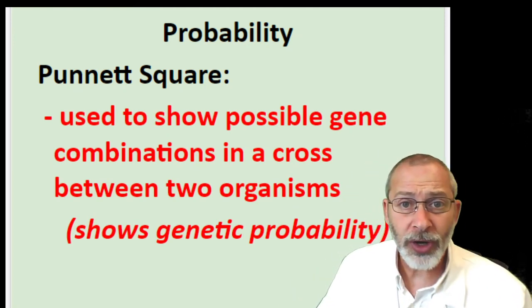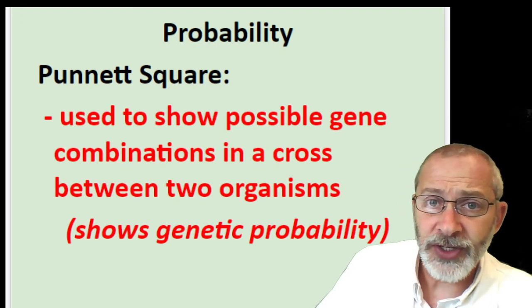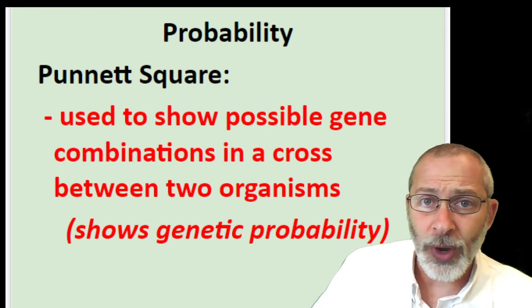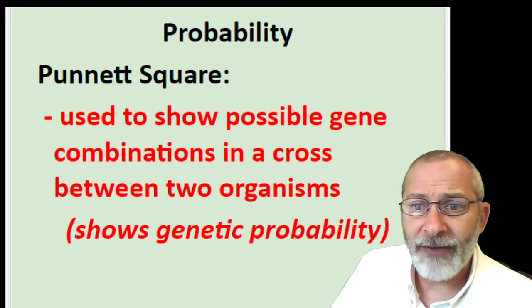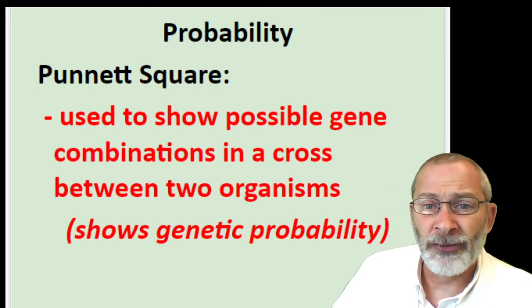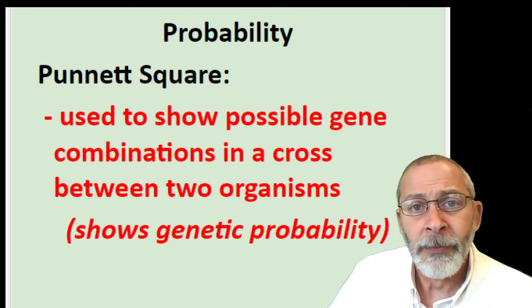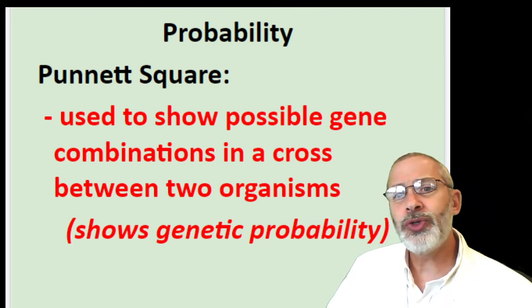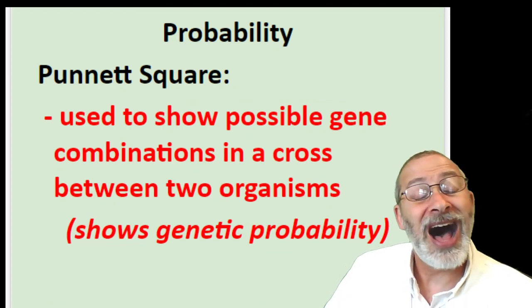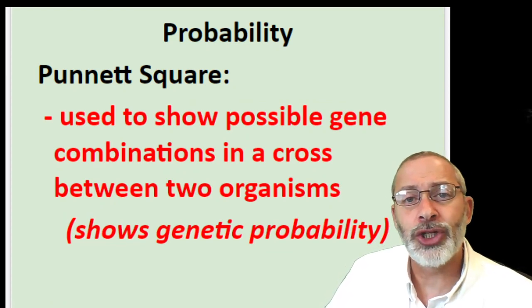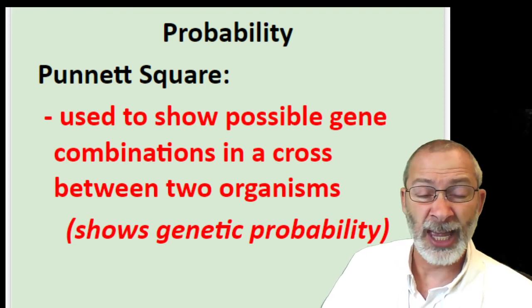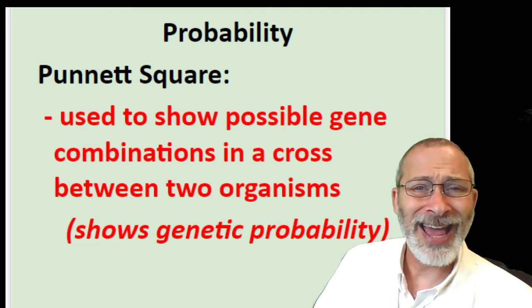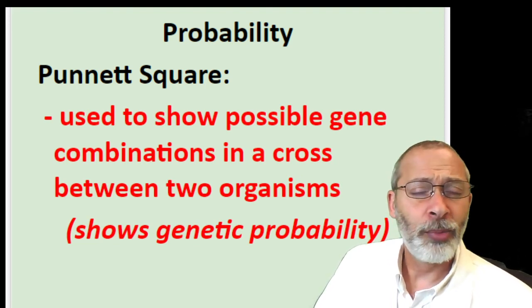We're going to have some fun with these Punnett squares today, but I'll make sure that you have this written down first. A Punnett square is used to show the possible gene combinations in a cross between two organisms. It shows genetic probability.